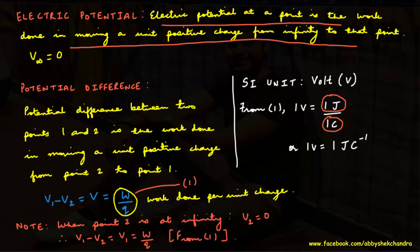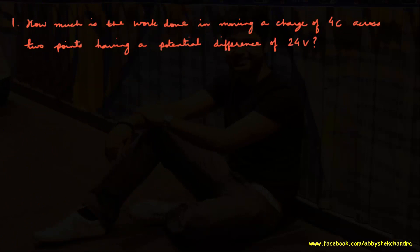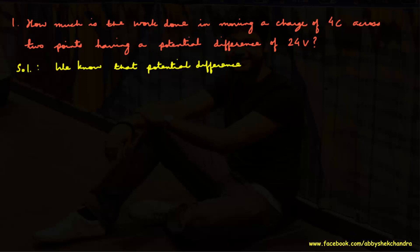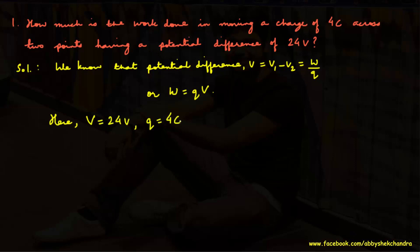Potential difference, or voltage, causes the flow of charges. Question 1: How much work is done in moving a charge of 4 coulombs across two points having a potential difference of 24 volts? Using W = q × V, with q = 4 coulombs and V = 24 volts, the required work done W = 4 × 24 = 96 joules.